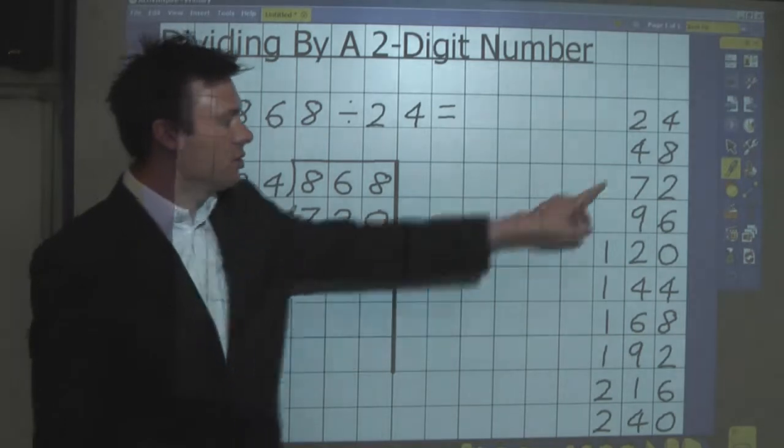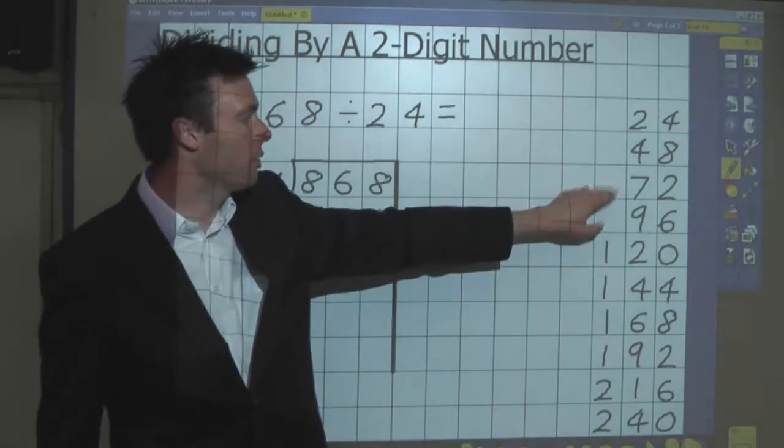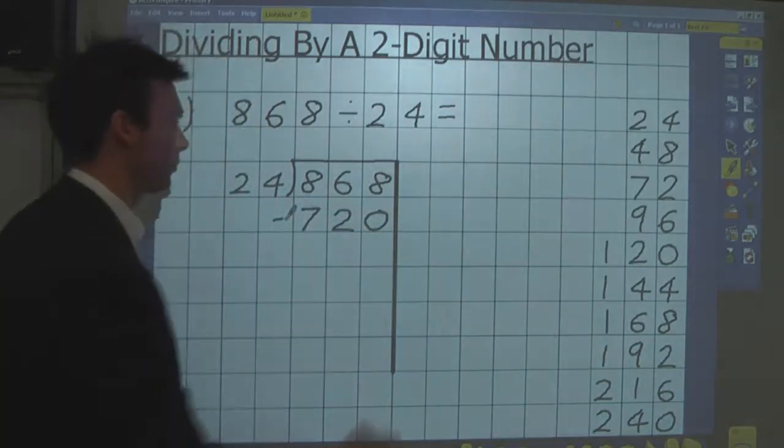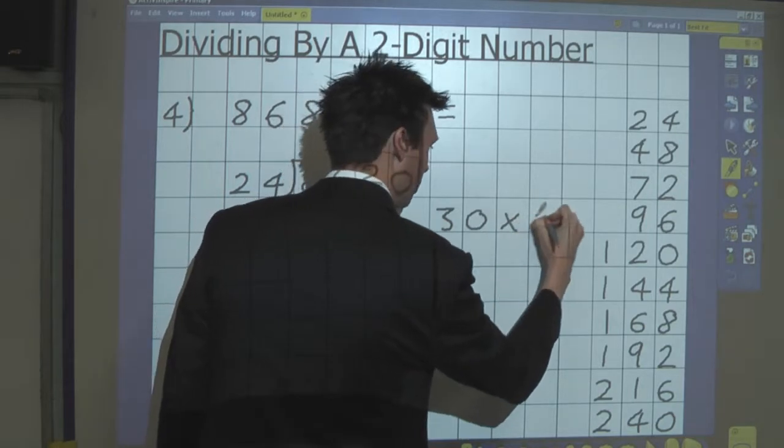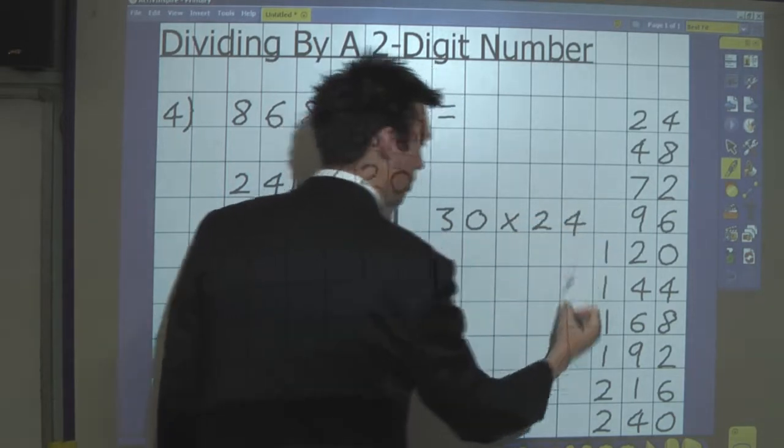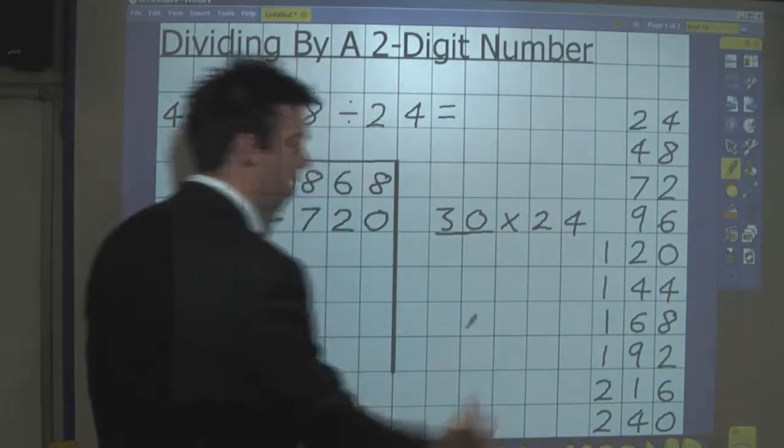And that is 30 lots of 24, because 3 lots of 24 is 72. So we write 30 lots of 24, and I underline 30.